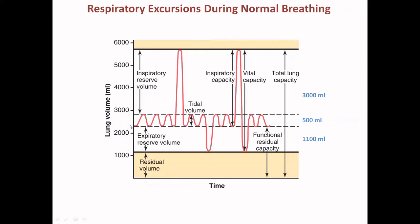Respiratory volumes during normal breathing: the normal tidal volume — breathing without any effort — is almost 500 ml. Once a person has completed a normal inspiration, they can then forcefully try to inhale the maximum air possible. That is known as the inspiratory reserve volume — lung space not in use during normal breathing. The maximum air that can be inhaled by forceful inspiration above the tidal volume is the inspiratory reserve volume, which is almost 3000 ml.